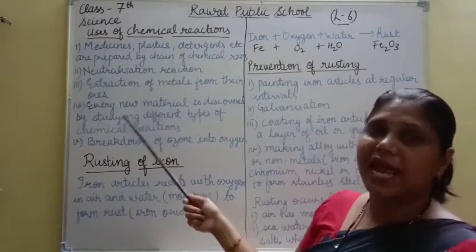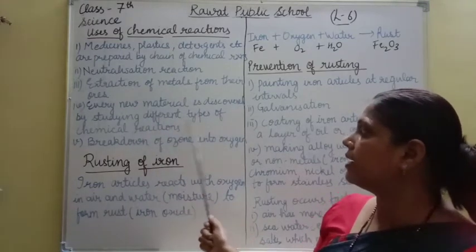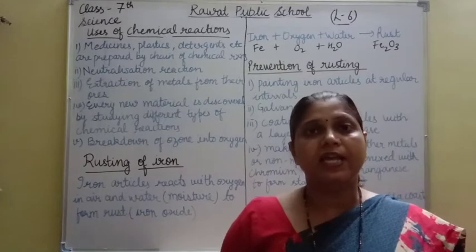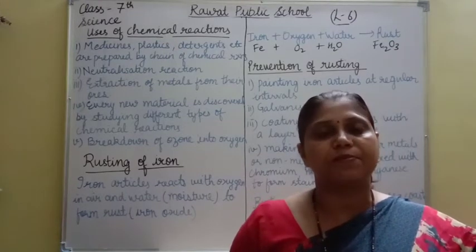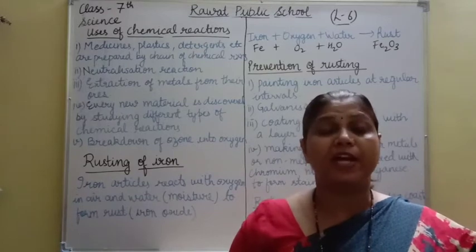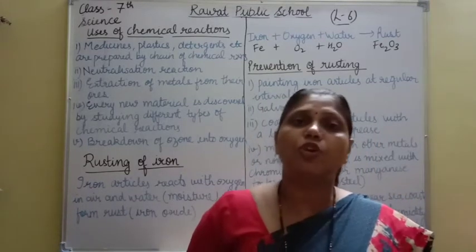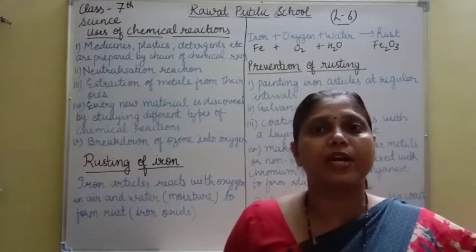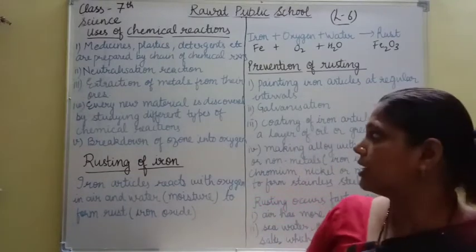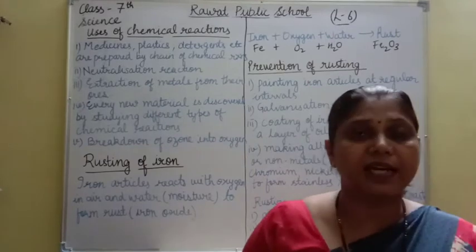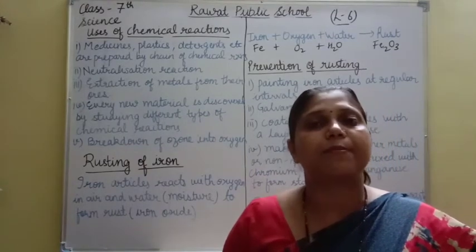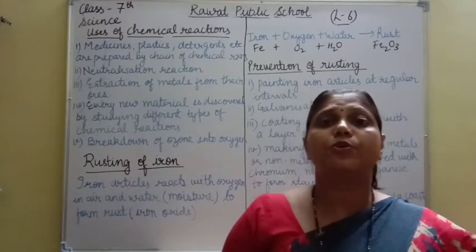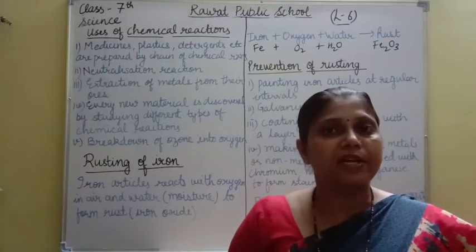Fourth: every new material. Another material is discovered by studying different types of chemical reactions. When products are made by reactants, different substances combine to make a new product. New products are discovered by chemical reactions — if we don't study chemical reactions, how will we get to know about any new material? So when any new material is discovered, we have to study many chemical reactions.